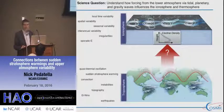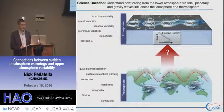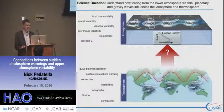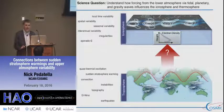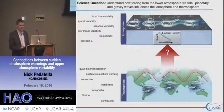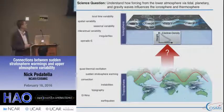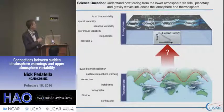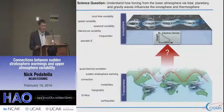The overall science question we are trying to address is to understand how forcing from the lower atmosphere via different types of waves — either tidal, planetary, or gravity waves — influences the ionosphere and thermosphere. There are several different mechanisms by which this can happen, including earthquakes, El Niño, topography, convection, instabilities, stratosphere warming, and QBO. There are many different processes in the lower atmosphere that can couple into variability in the upper atmosphere.